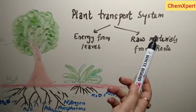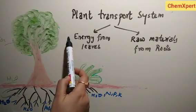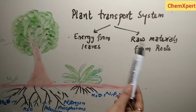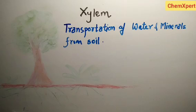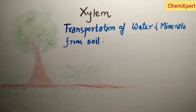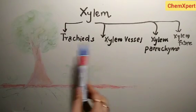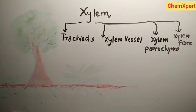The plant transport system includes two major pathways: transport of energy from leaves to different parts, and transport of raw material from roots to the leaves. The first component is xylem, through which transportation of water and minerals from the soil takes place. Xylem has different components: tracheids, xylem vessels, xylem parenchyma, and xylem fiber.